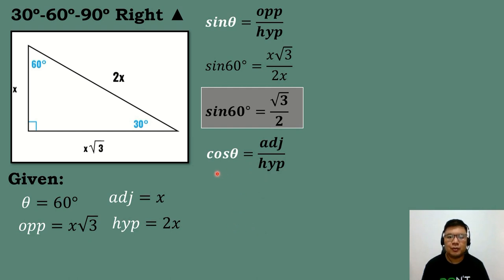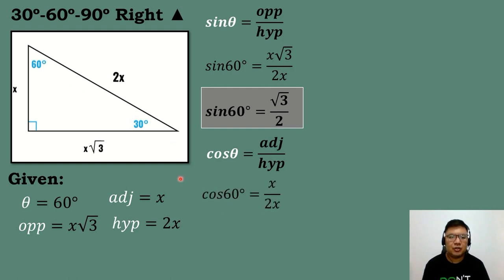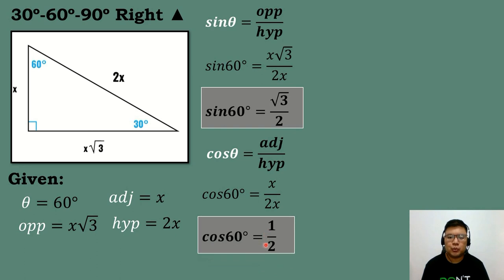Let's compute now for the value of cosine theta. Cosine is equal to adjacent side all over the hypotenuse. We will substitute the corresponding value. Cosine 60 — the adjacent side is equal to x, the hypotenuse is equal to 2x. Simplifying, x over 2x is just equal to 1 half. So cosine 60 degrees is equal to 1 half.